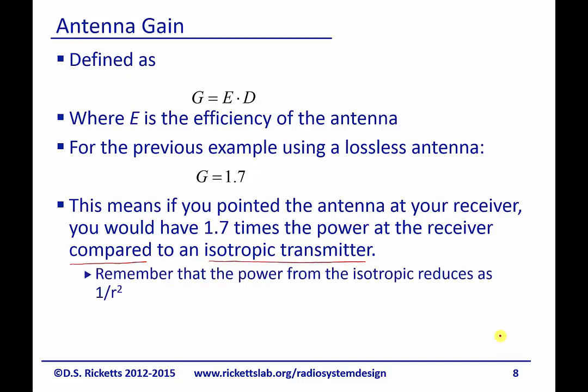Now, you need to remember that the power from an isotropic reduces as 1 over r squared. G isn't giving you the actual power received. It's telling you the ratio. So that means that as you move away from the antenna, it's still dropping as 1 over r squared. It's just that the ratio of the antenna with a gain of 1.7 has 1.7 times more power in the directivity that is highest. Or we could see that was the upward pointing lobe.